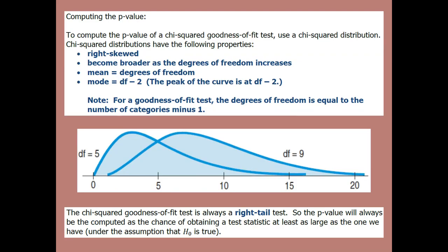Fortunately, the distribution we use to compute the p-value adjusts for the number of categories, so we can differentiate those two cases. To compute the p-value for any chi-squared test, you use a chi-squared distribution. Chi-squared distributions are right-skewed and become broader as the degrees of freedom increases. The mean equals the degrees of freedom, and the mode — the peak — is at degrees of freedom minus two. For example, with five degrees of freedom the peak is at three, and with nine degrees of freedom the peak is at seven. The p-value is always a right tail, since the test statistic is always positive — it's always the probability of obtaining a test statistic at least as large as the one we got.